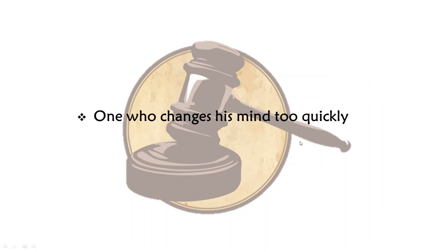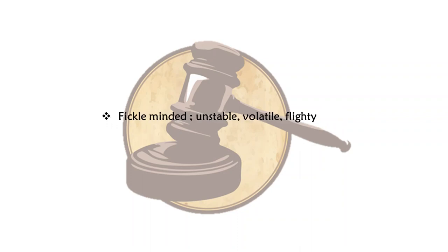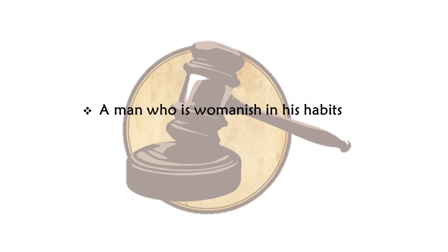One who changes his mind too quickly — a person who keeps changing his mind — would be called fickle-minded. Synonyms would be unstable, volatile and flighty.